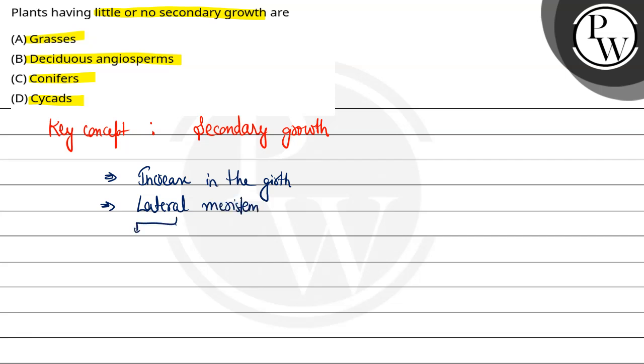Lateral meristem do type ka cambium banata hai. First one is the vascular cambium, and the second one is the cork cambium.